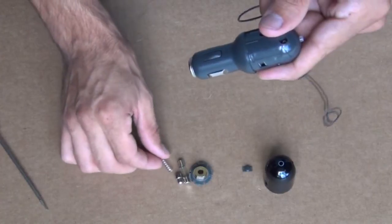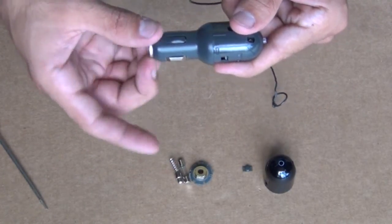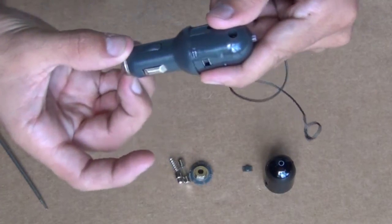Now the spring keeps tension on everything so that the fuse always makes a connection to the power outlet of the car.